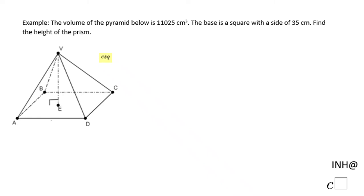Welcome or welcome back to INH at C squared. In this example we have a pyramid. We know the volume is 11,025 and the base is a square with a side of 35 cm. We need to find the height of this prism.